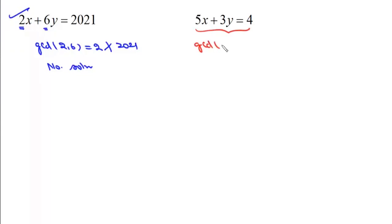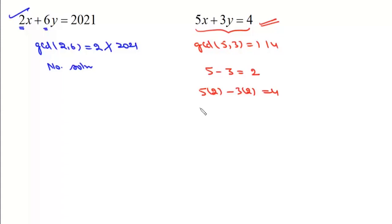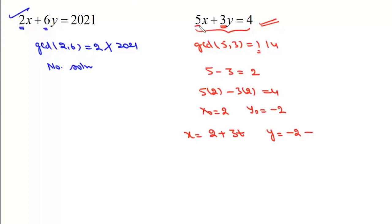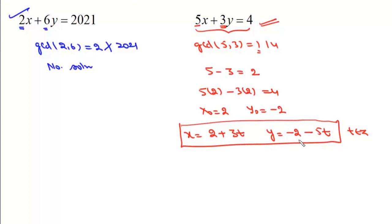For 5x + 3y = 4, GCD of 5 and 3 is 1, and 1 clearly divides 4, so this equation will have integral solutions. To write the general solution we need a particular solution x0 and y0. We know 5 - 3 = 2, so multiplying by 2: 5·2 - 3·2 = 4, giving x0 = 2 and y0 = -2. The general solution is x = 2 + (b/d)·t = 2 + 3t, and y = y0 - (a/d)·t = -2 - 5t, where t belongs to Z.